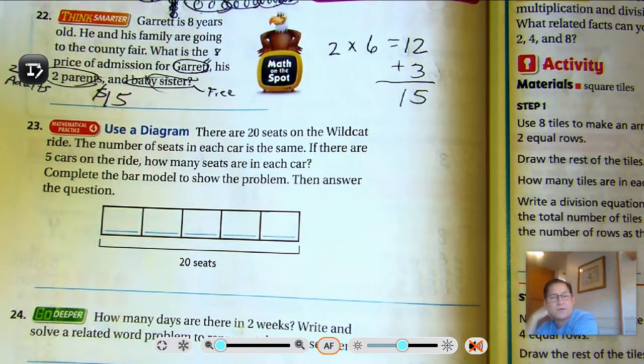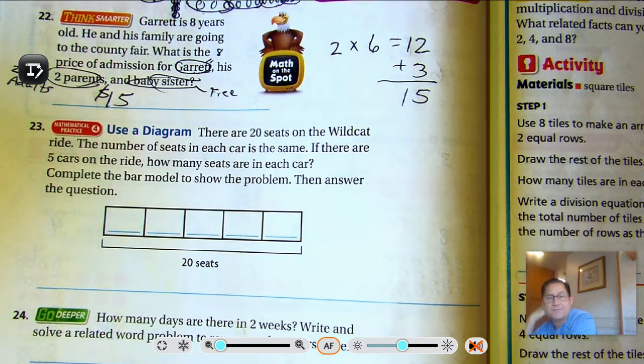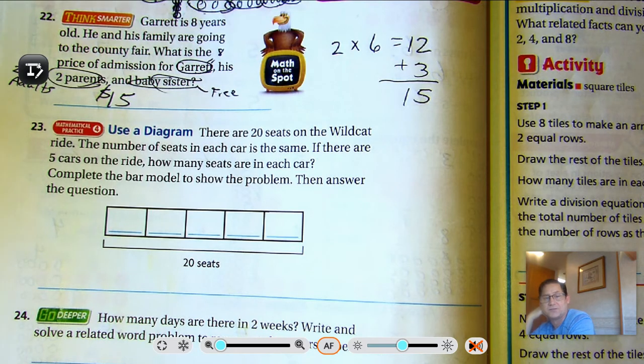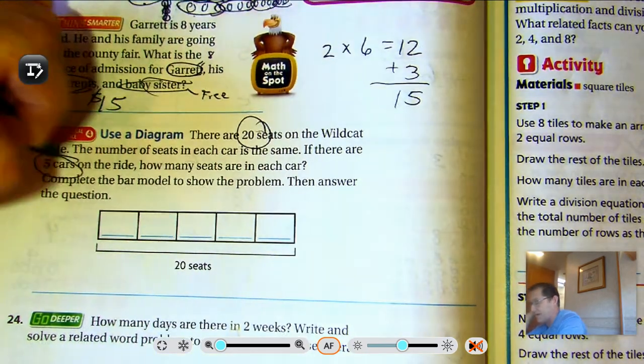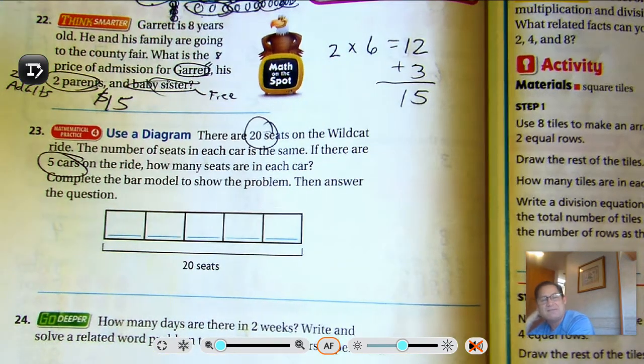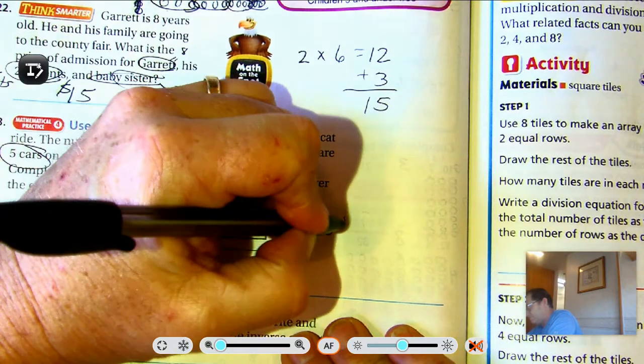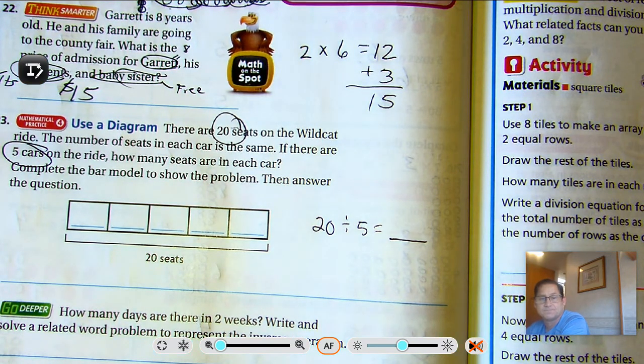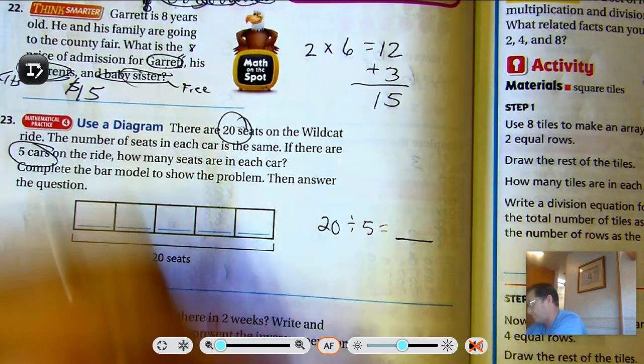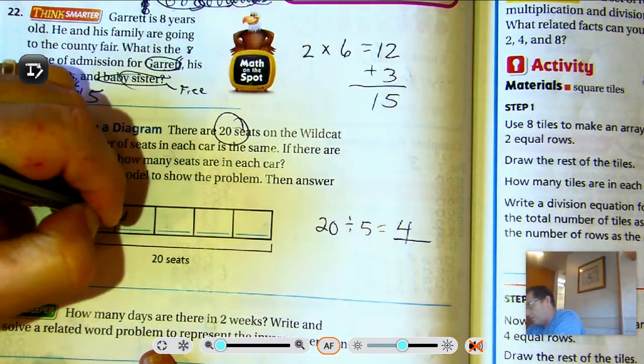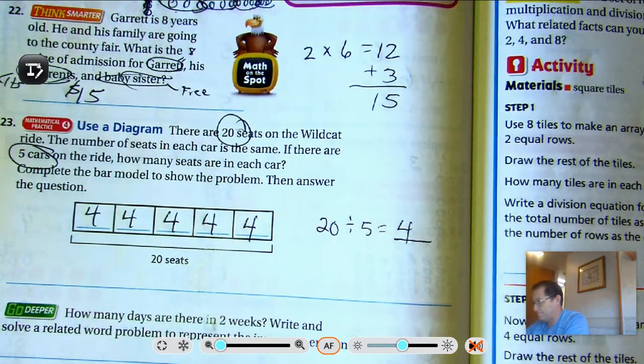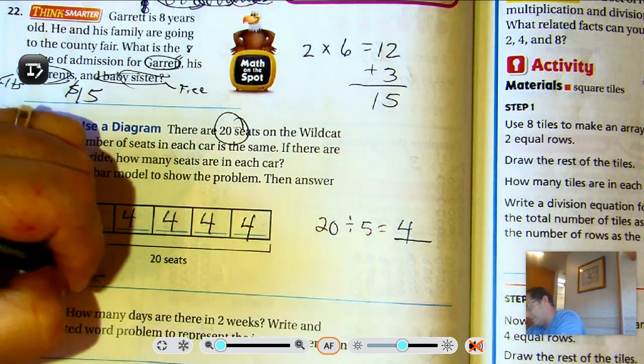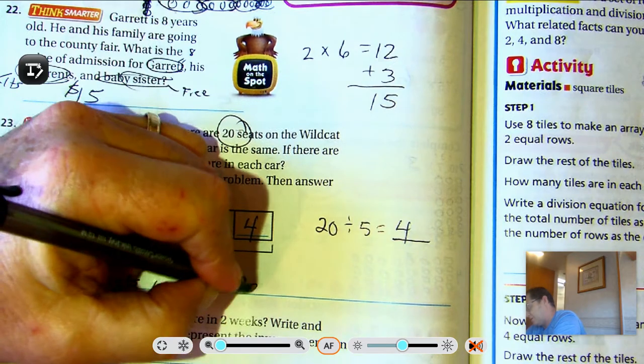There are 20 seats on the Wildcat ride. The number of seats in each car is the same. If there are 5 cars on the ride, how many seats are in each car? Complete the bar model to show the problem, then answer the question. 20 seats, 5 cars on the ride. 1, 2, 3, 4, 5. So 5 times what is 20? Counting by fives: 5, 10, 15, 20. 4. So counting by fours: 4, 8, 12, 16, 20. 4 seats in each car.